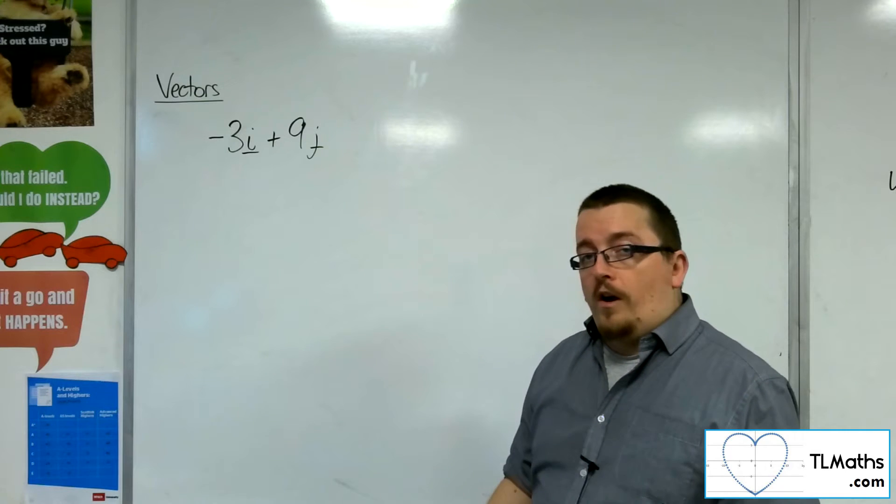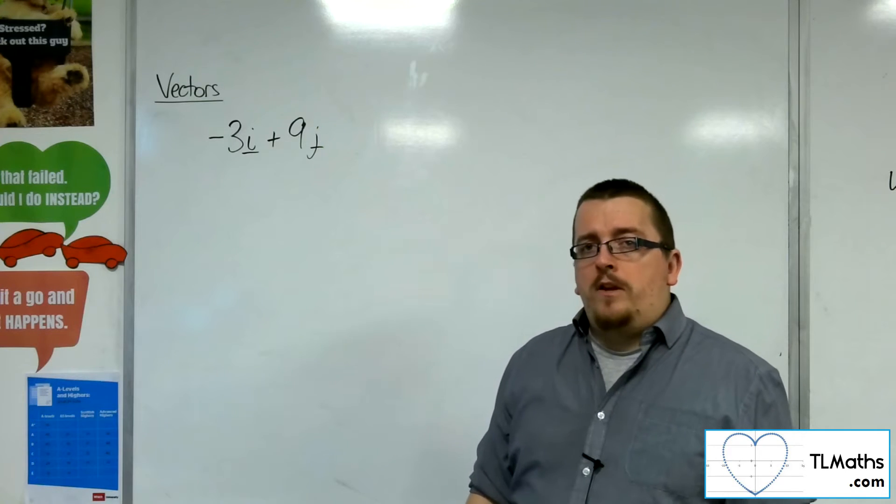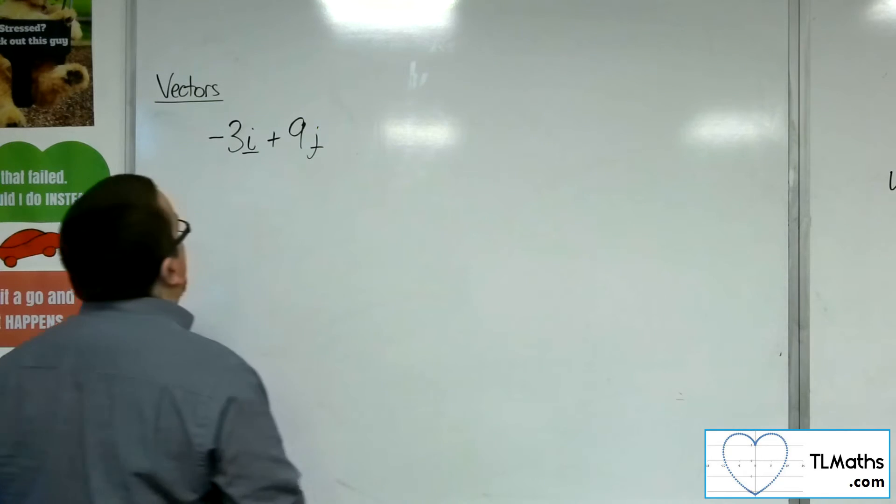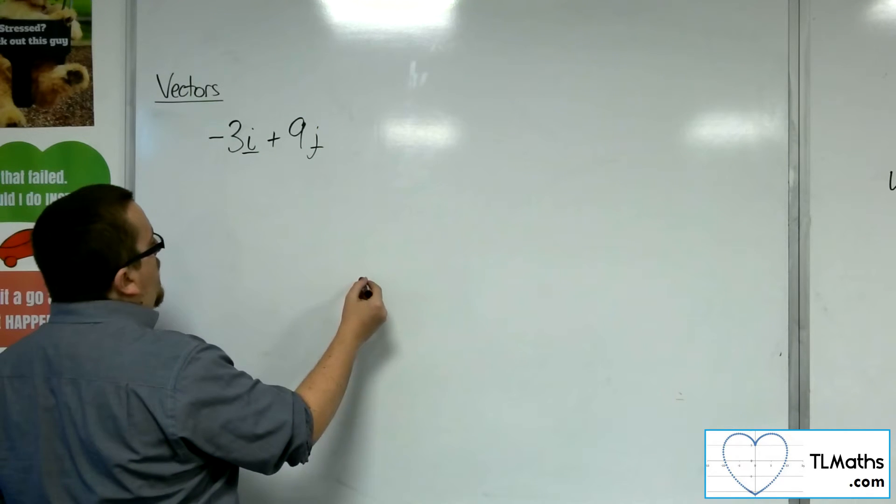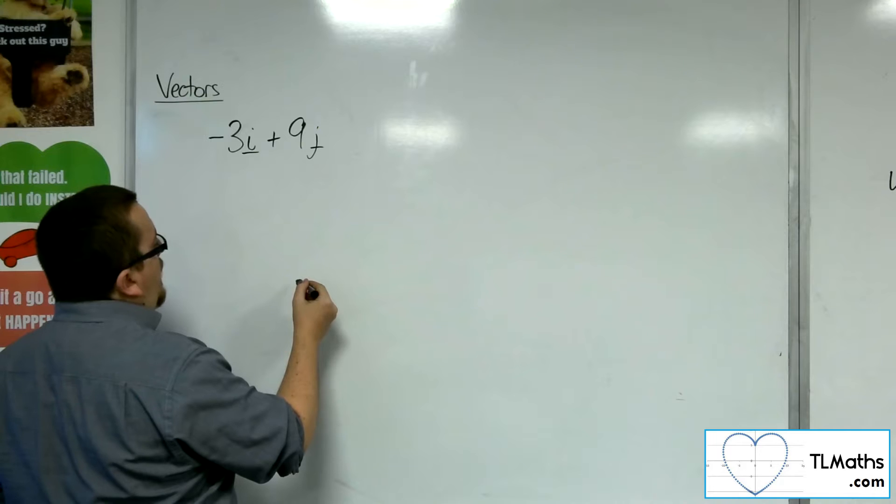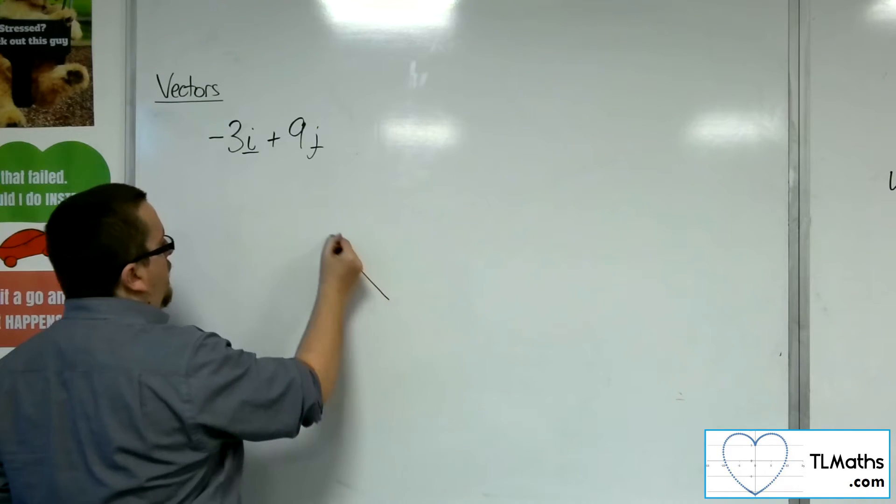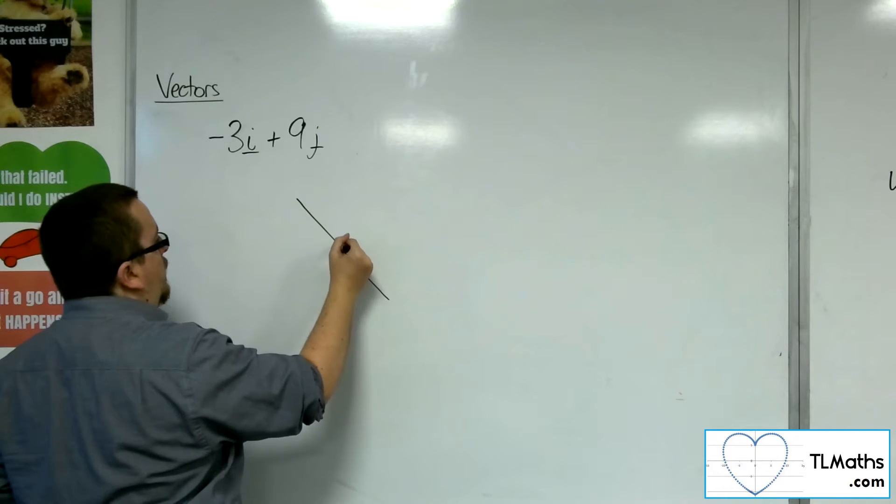So first of all, I would suggest that we draw out a diagram to see what this vector looks like. Because I would be going minus 3 in the x direction and 9 in the y direction, it would be a vector that is pointing something like that.